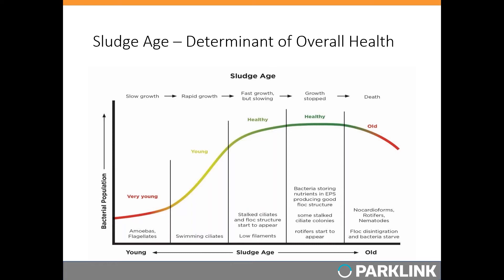If your sludge age stays too old for a prolonged period, you may get foam formation from fine particles and dead microbes floating on the surface, which stabilize air bubbles. Old sludge also favors the growth of Nocardia — branching filaments that look like little tumbleweeds under the microscope — which float on the surface and can cause large foaming events that upset your entire operation. Foam and scum also reduce oxygen diffusion into the water, leading to lower nitrification efficiency.